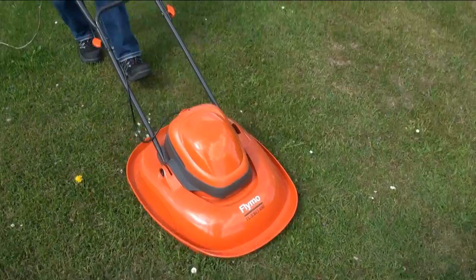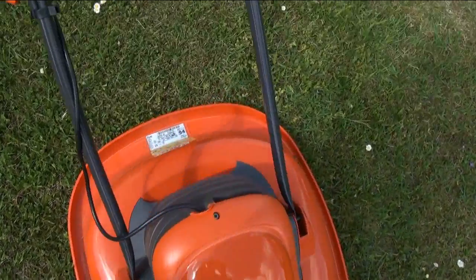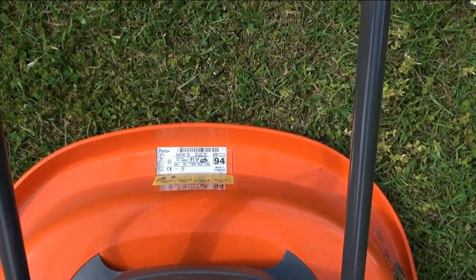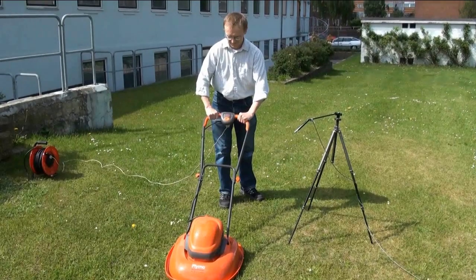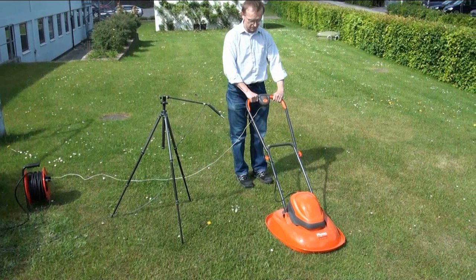Noise labeling of lawn mowers is one way of containing this source of annoyance by specifying the maximum permissible sound power. Here we see the sound power being determined using an array of ten microphone positions according to ISO standard 3744.